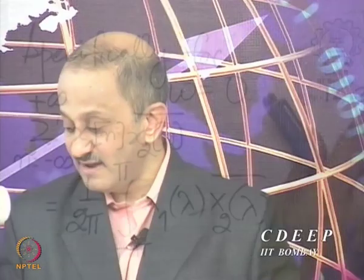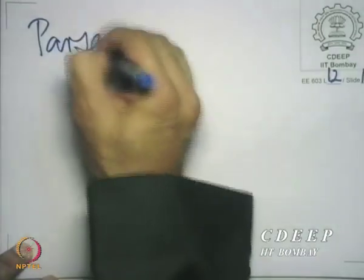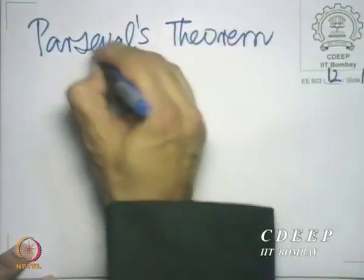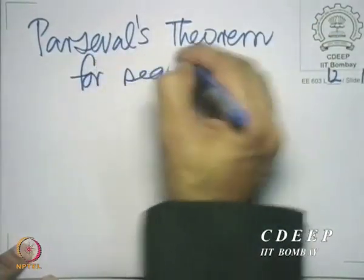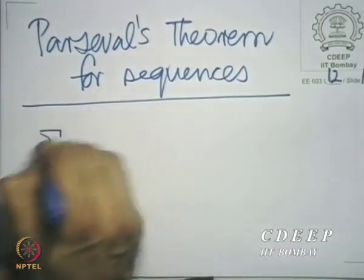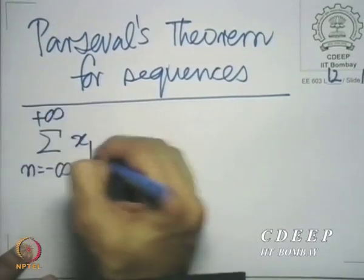This very important result has a very central place in discrete time signal processing. This is called Parseval's theorem for sequences, and we are saying in effect that the dot product of the sequences is unchanged, whether you look at it in time or in frequency.